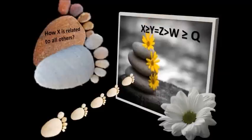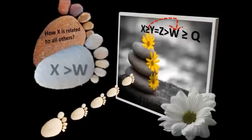Next, let's see how x and w are related. Again, look at the symbols between x and w: greater than or equal to, equal to, and greater than. Which has the highest priority? Greater than has the highest priority. So obviously the answer is x greater than w.